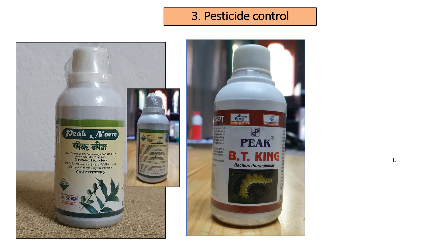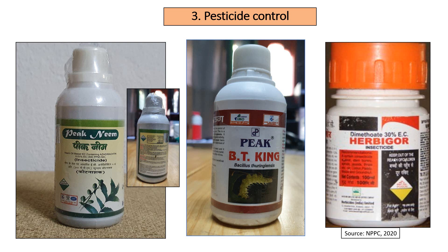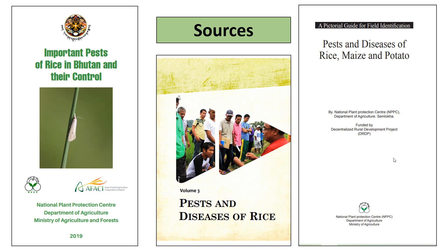Pesticide control: Neem products may be applied to the leaf whorl following the instructions carefully. Bacillus thuringiensis has also been reported to be effective against the pest. Under severe cases or unavoidable conditions, dimethoate at 2 millilitres per litre of water can be applied.